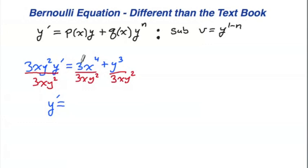This is going to equal, the threes are going to cancel, x to the fourth over x is x to the third. Then y to the second, I'm going to write it as y to the negative second. Plus, the y cubed divided by y squared is going to leave you with a y. I'm going to write it as a separate entity. So this is going to be 1 over 3x times y, so that it looks like this up here.